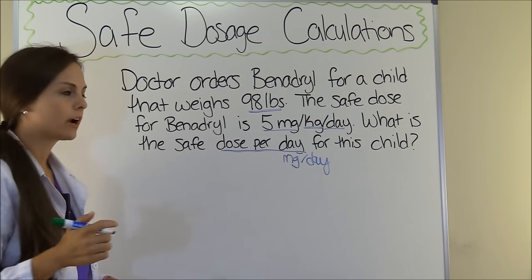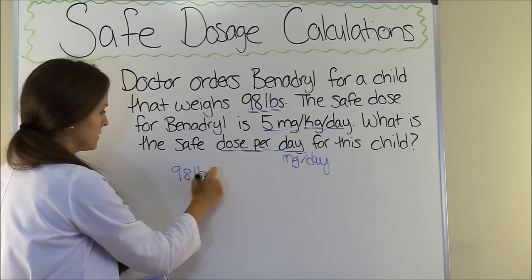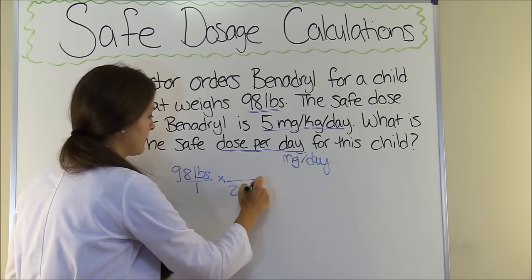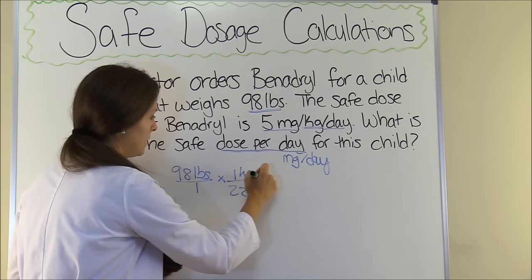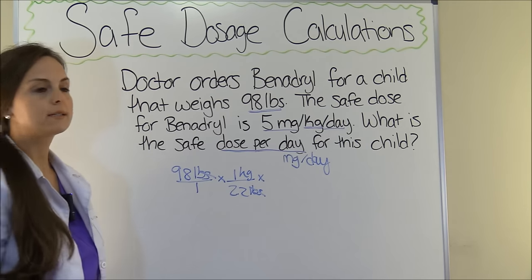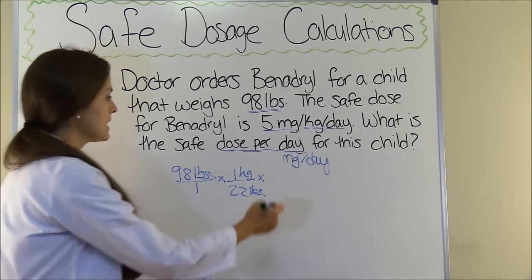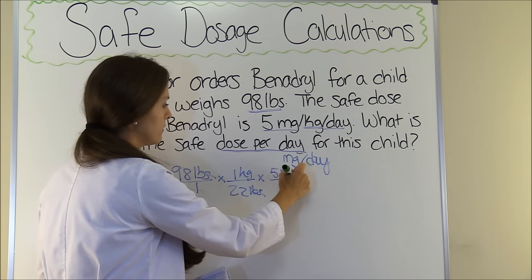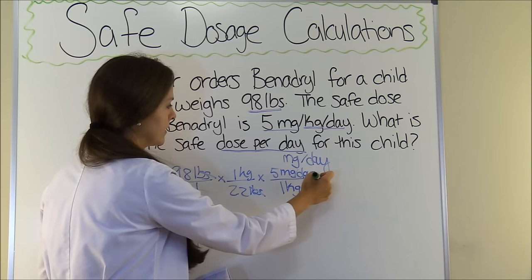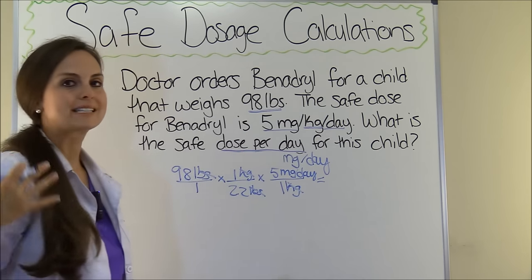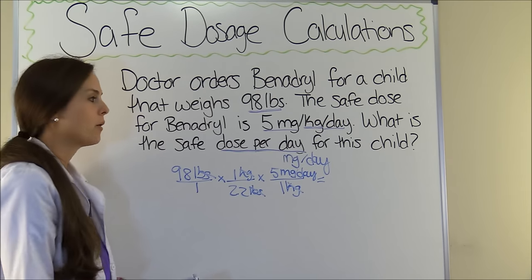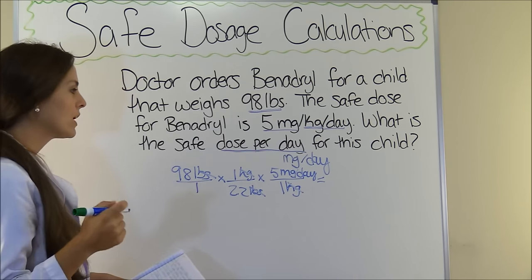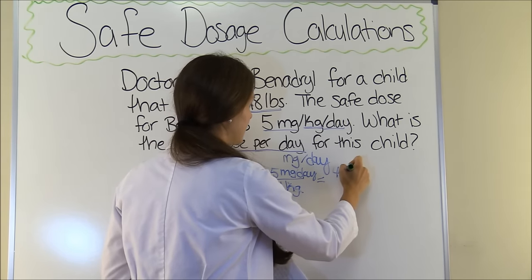So: 98 pounds, and we know that there are 2.2 pounds in one kilogram. Pounds cancels out and we're in kilograms. Now we're ready to plug in our safe dose range: 1 kilogram equals 5 milligrams of Benadryl per day. Kilograms cancels out, so we are left with milligrams per day — exactly what this problem wants. We're going to multiply everything at the top, multiply everything at the bottom, then divide. So 98 × 1 × 5 = 490.